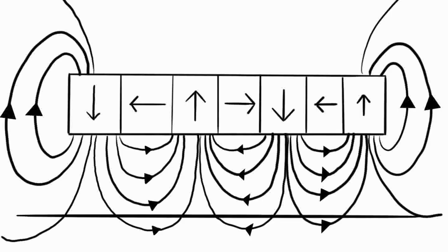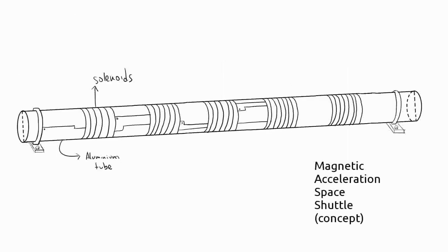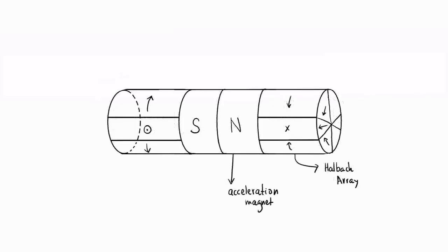The shuttle is based on two principles: magnetic levitation and the acceleration that a magnetic field produces over a magnet. The shuttle could be a long horizontal aluminum tube surrounded by solenoids, and the capsule could be made from a magnet that is aligned with the external field and should hold Halbach arrays on each side.